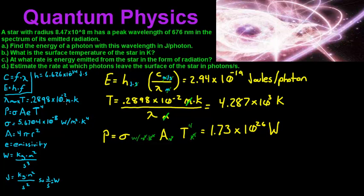For part D, estimate the rate at which photons leave the surface of the star in photons per second. This is simply a unit conversion. We already know the energy in joules per photon, and we know the total power of our star — that's the rate at which the star is emitting radiation.